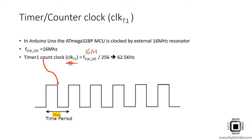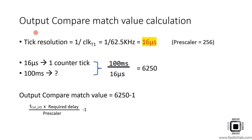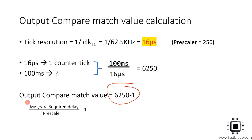Now we calculate the output compare match value. With a pre-scaler of 256, the tick resolution is 16 microseconds, meaning the counter ticks every 16 microseconds. To generate a time base of 100 milliseconds, using simple mathematics: 100ms divided by 16 microseconds gives 6250 ticks. So the output compare match value to store in the output compare register is 6250 minus 1, because the counter starts from 0.